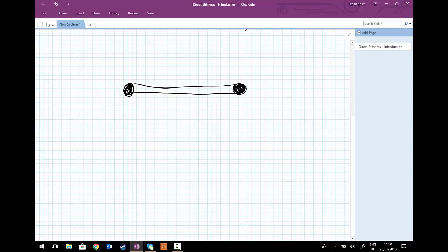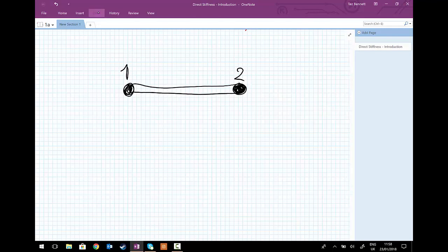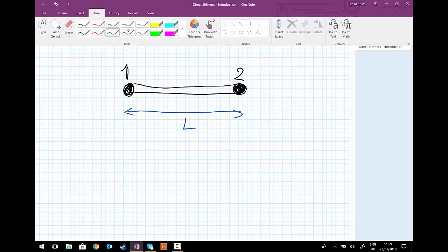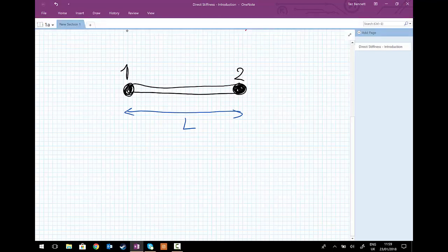At the left-hand end we have node 1, at the right-hand end we have node 2. The length of this truss element we're going to call L. And we're also going to note that at node 1, we can have a displacement in the positive x direction of U1. And at node 2, we can have a displacement in the positive x direction again of U2.